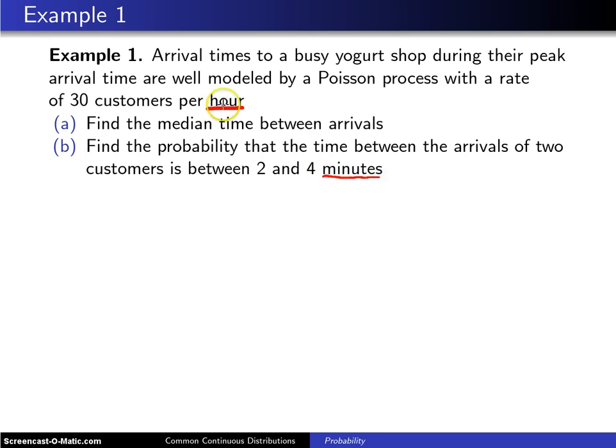Once again we have the same problem that crops up occasionally with Poisson processes, and that is sometimes units are given in one particular designation here and another down here. Let's go ahead and choose minutes—we will work in minutes as we go—and furthermore let's define this median that we're looking for in part a to be m.